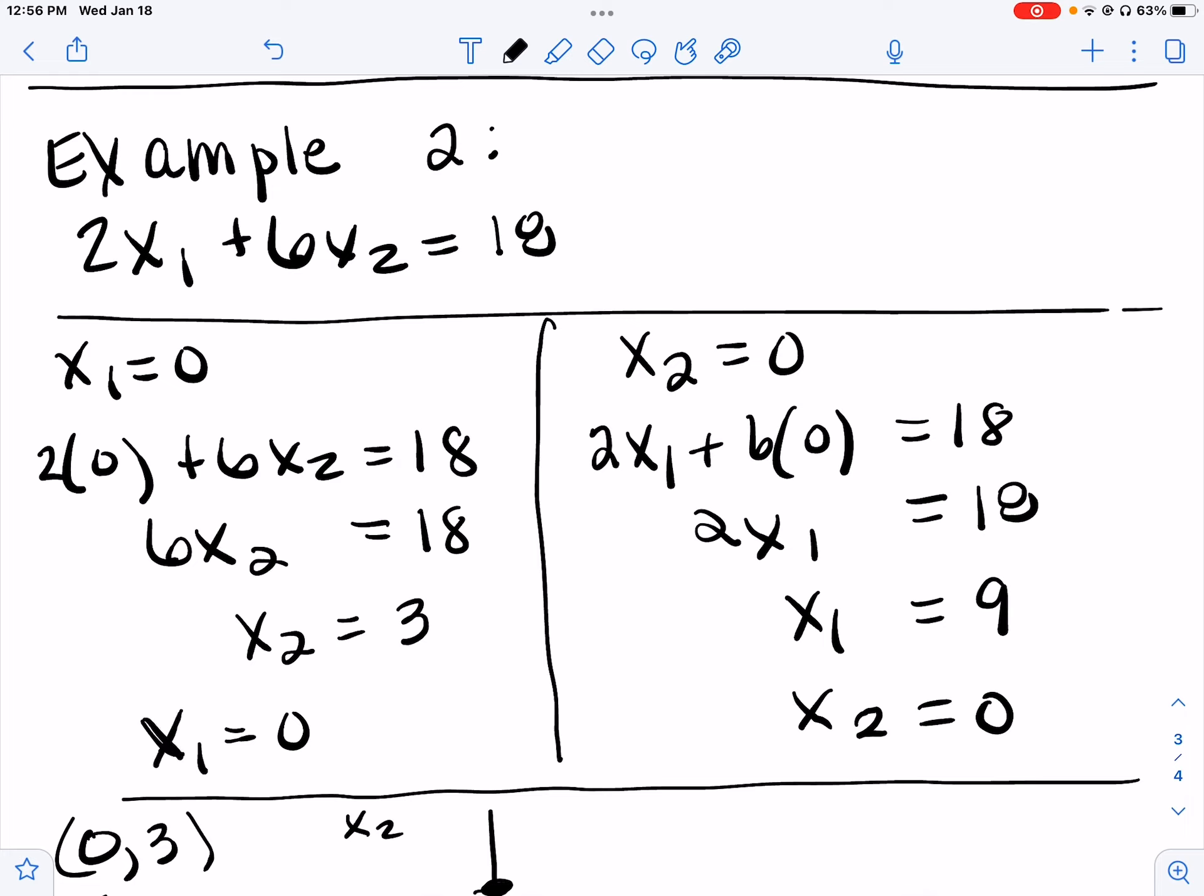Okay, then on the right side there, x2 equals 0. Plug in. So we get 2x1 plus 6 times 0 equals 18. 6 times 0 is 0. 2x1 equals 18. Divide both sides by 2 and we get 9 for x1. And we got that when we plugged in x2 equals 0.